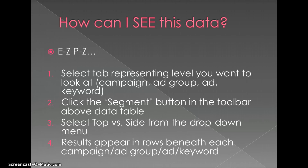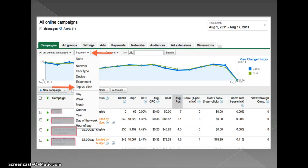How can you see this data? It's easy — you go to select the tab representing whatever level you want to look at, be it campaign, ad group, the actual ad text itself, or the keyword. You'll click segment in the toolbar right above your data table, then select top versus side, and your results will appear below whichever category you've chosen. So I selected campaigns, clicked down on segment, selected top versus side, and the table expands and breaks it out at a more granular level.